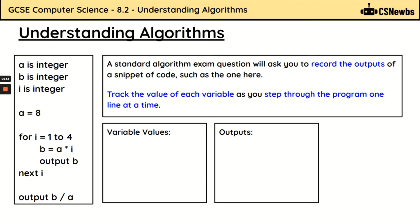A common exam question is to be given a standard algorithm and be able to understand it to record the outputs of that code. Here on the left hand side is a simple piece of pseudocode and we are going to go through this line by line to understand what the outputs of this program would be. We're going to record the value of each variable as we go along as well as the outputs. It's important that you record the variable values to help you with the outputs.